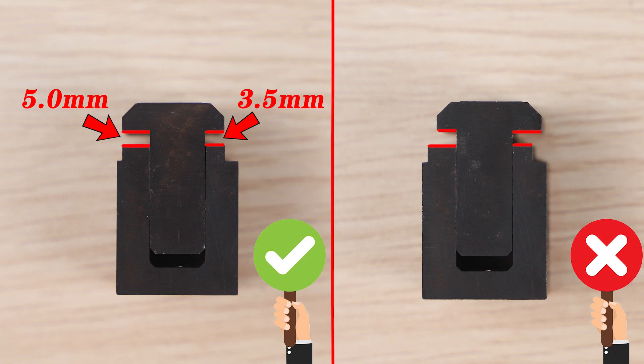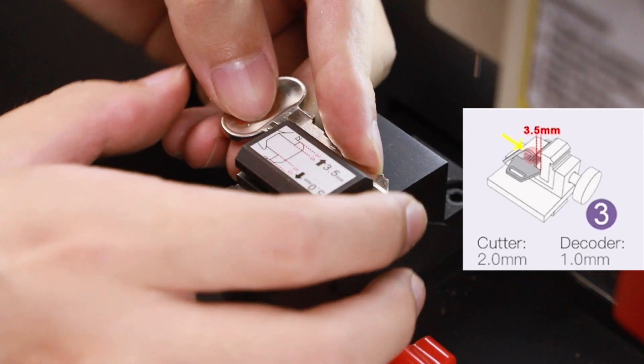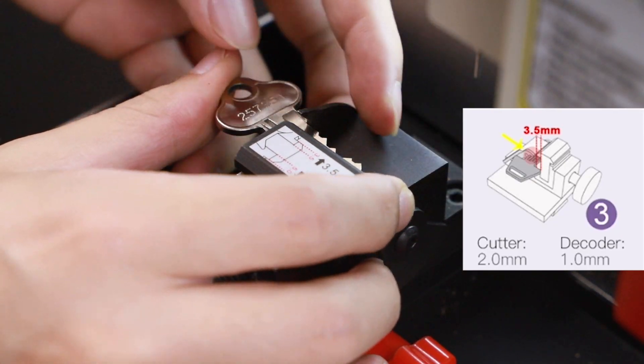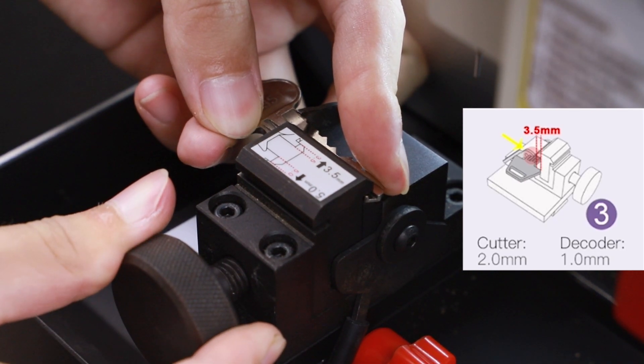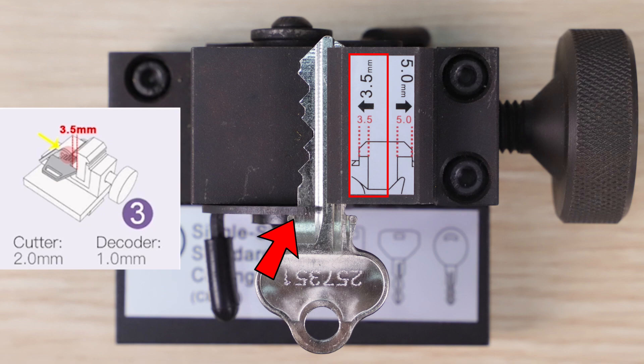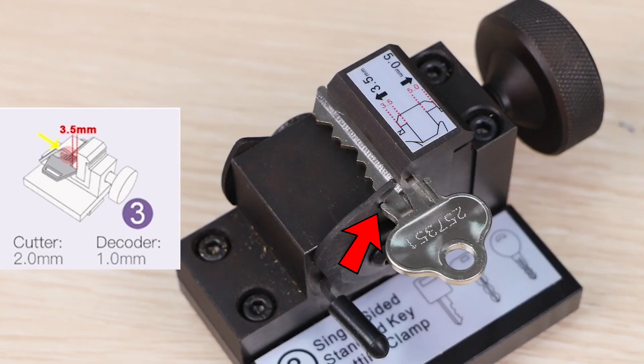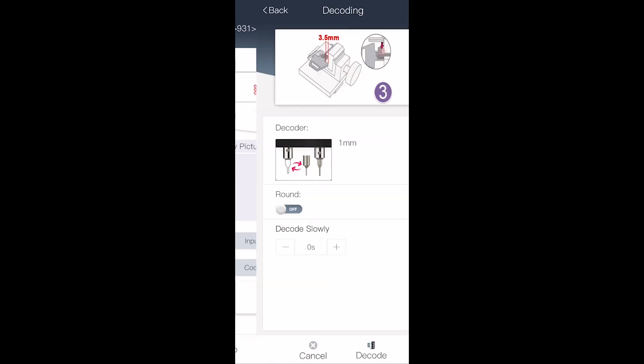Fix the original key at 3.5 millimeters side as shoulder alignment by the shoulder stopper on the jaw shown in the figure. Please make sure the key is fixed flatly and the jaw is clean of shavings, then click decode to decode.